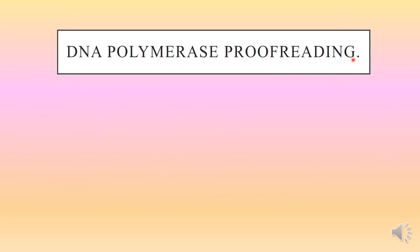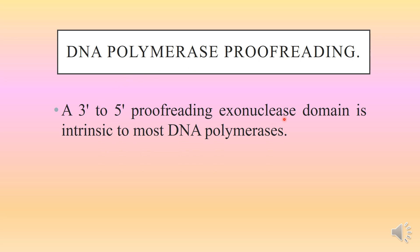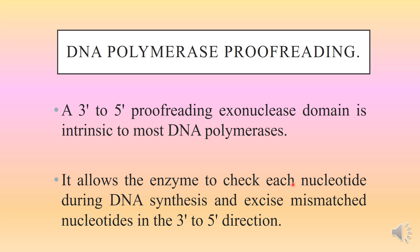DNA polymerase proofreading: a 3' to 5' proofreading exonuclease domain is intrinsic to most DNA polymerases. It allows the enzyme to check each nucleotide during DNA synthesis and excise mismatched nucleotides in the 3' to 5' direction. We know that DNA polymerase replicates in the 5' to 3' direction, adding a nucleotide at the 3' end. In addition, it has the ability to check its own activity — whether what it has done is correct — and that is done by the 3' to 5' proofreading exonuclease domain, which is present in most DNA polymerases.